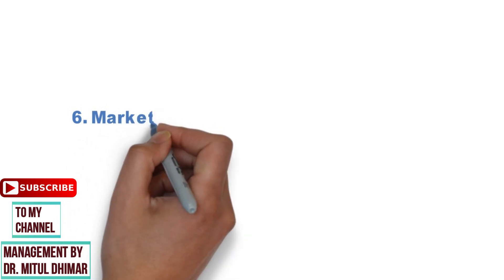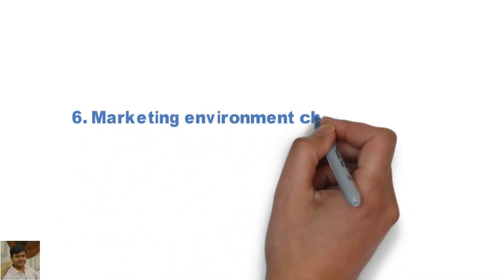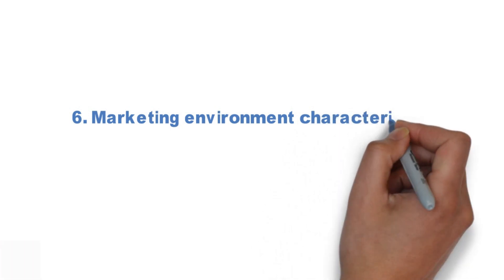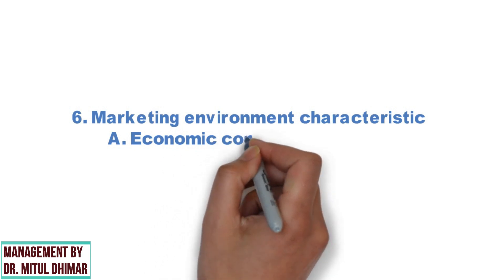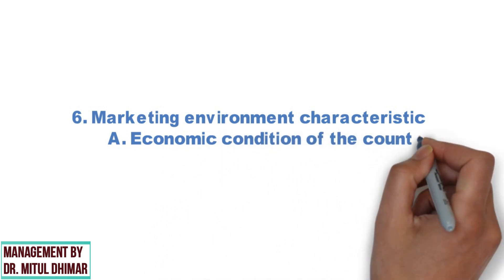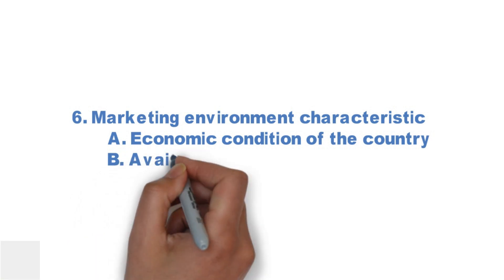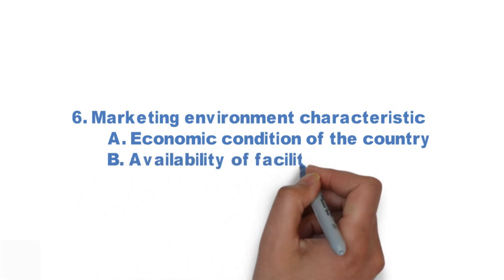Last factor can be marketing environment characteristics. The marketer needs to consider the overall business environment while deciding on marketing channel. Following two factors we can consider in marketing environment characteristics: economic condition of the country and availability of facilities.